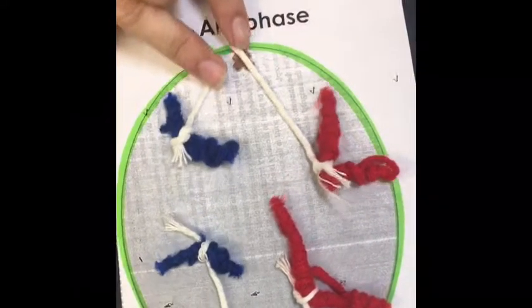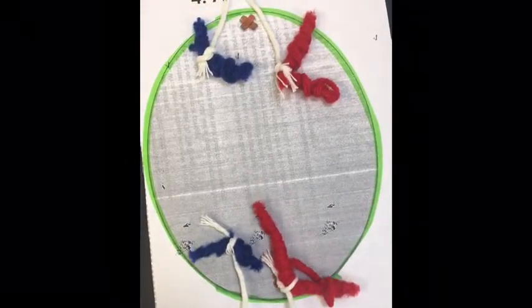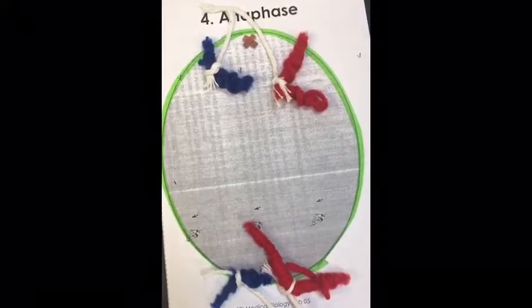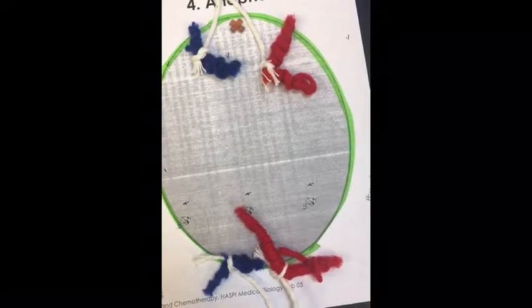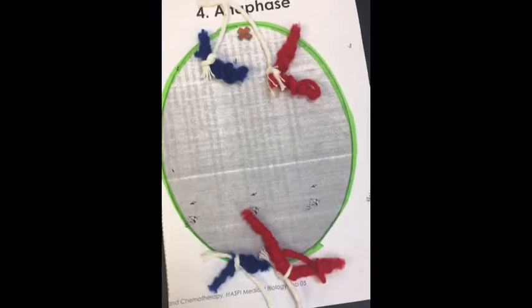Anaphase is the fourth stage in which the chromosomes move away from one another to opposite poles of the spindle. The purpose of the spindles and spindle fibers is to pull apart the chromosomes into chromatids.